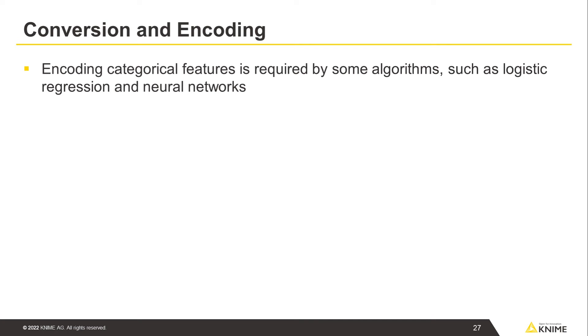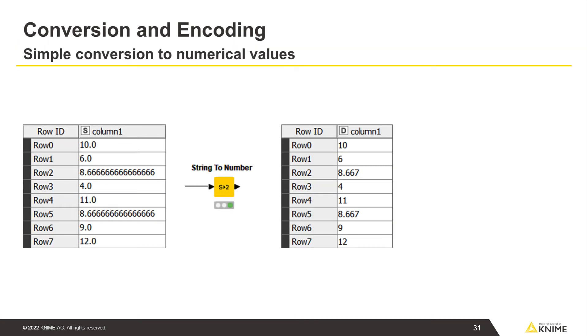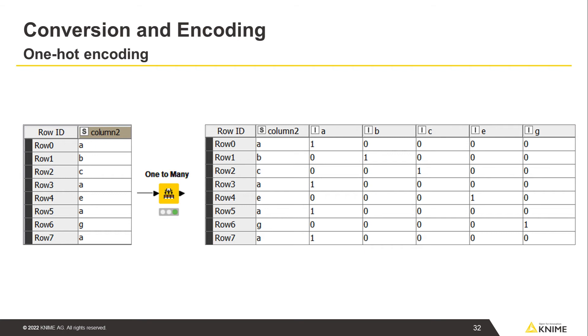Encoding of categorical features ranges from a simple conversion to numerical values to index coding and one-hot encoding. The simple type conversion to numerical values is obtained with the string to number node. We can perform one-hot encoding with the one-to-many node. It transforms all values in a categorical column into many columns with headers from the values in the original column. The column cells are then filled with one or zero. One indicates the presence and zero the absence of that value in the original column.